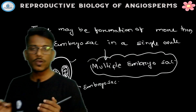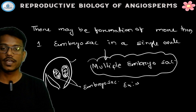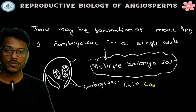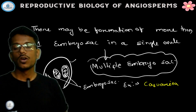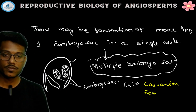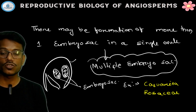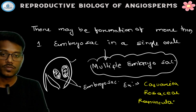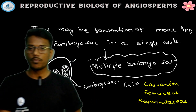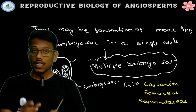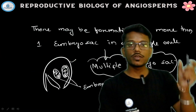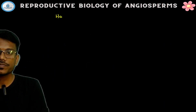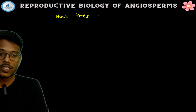Multiple embryo sac is generally seen in some groups of plants like Casuarina family and Rosaceae family. It is also seen in case of the Ranunculaceae family. So how this multiple embryo sac is developed — that we have to discuss.